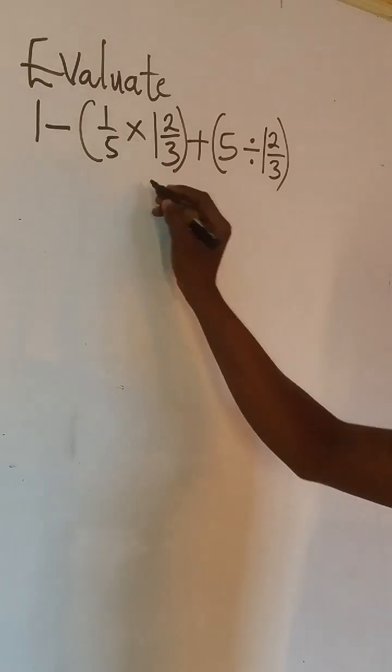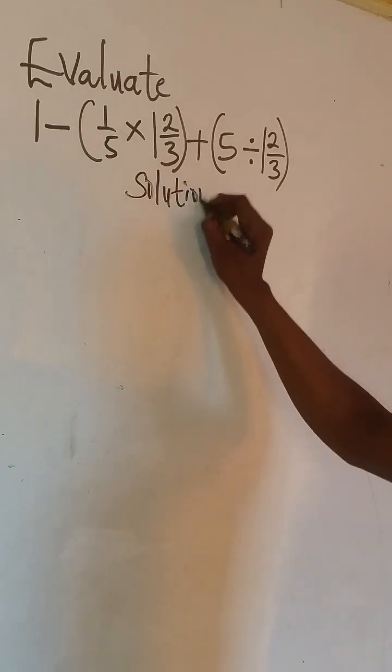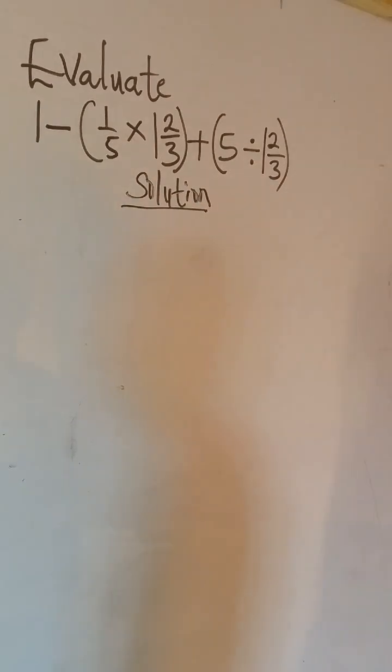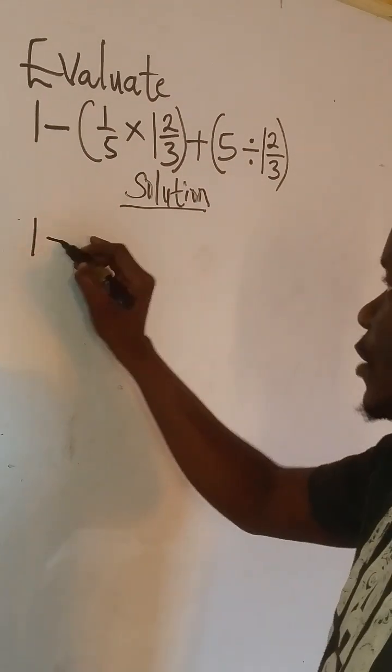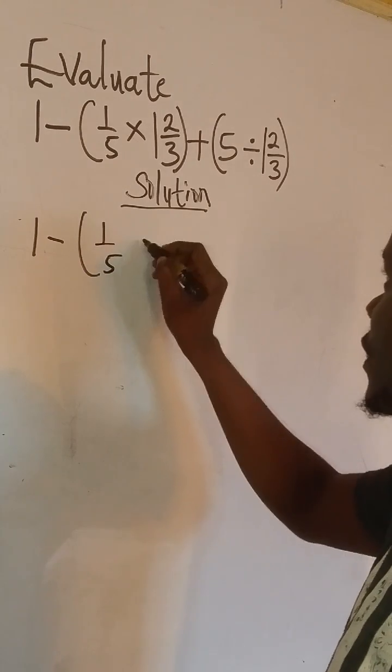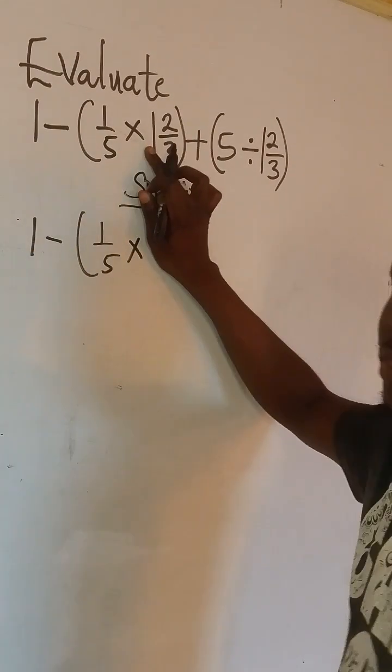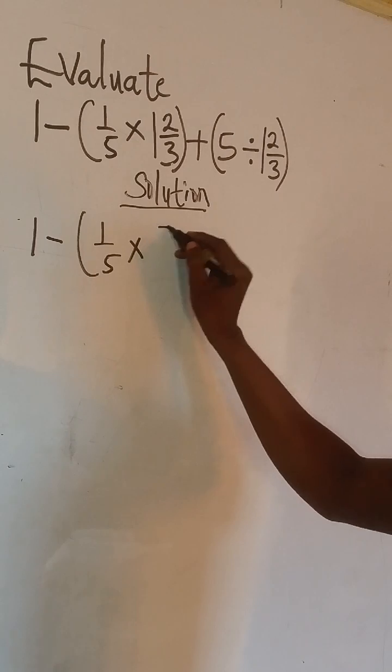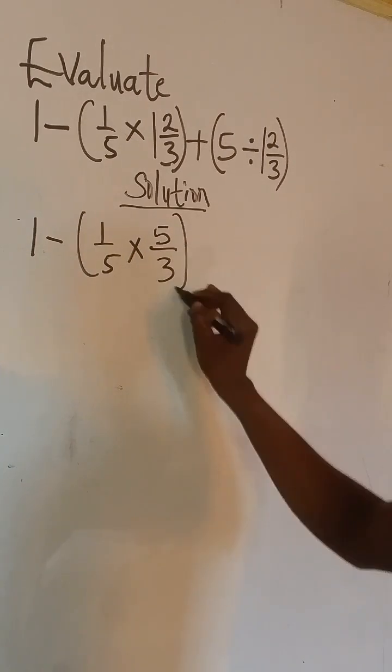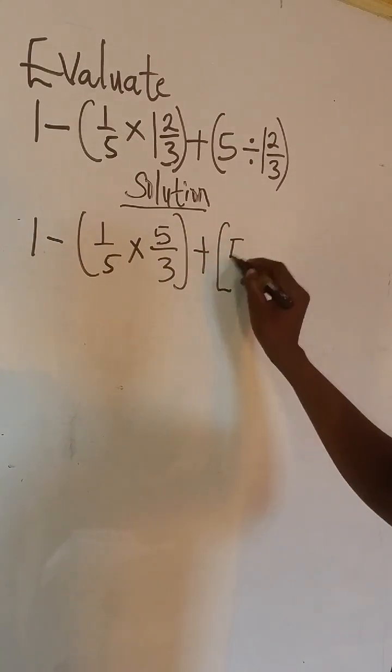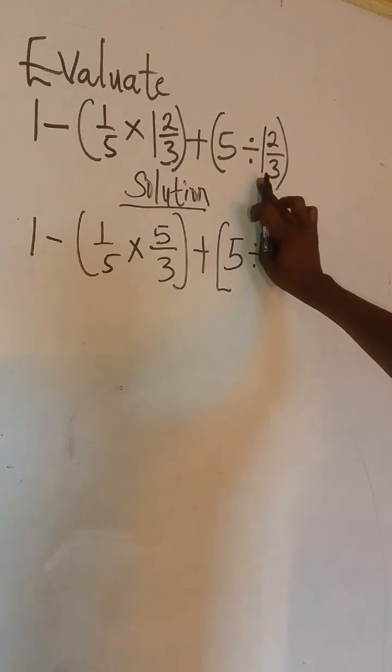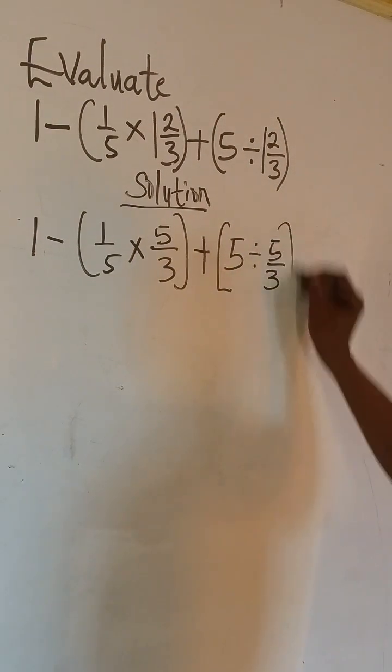The first thing we have to do here is to convert all mixed fractions to improper fractions. So we have 1 minus 1 over 5 times 3 times 1 is 3 plus 2 gives us 5 over 3 plus 5 divided by 3 times 1, 3 plus 2, 5 over 3.